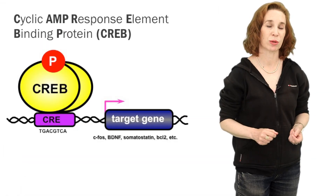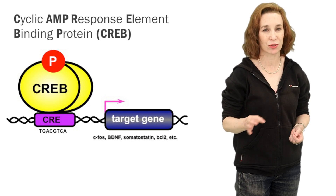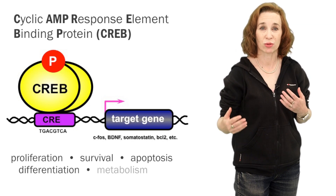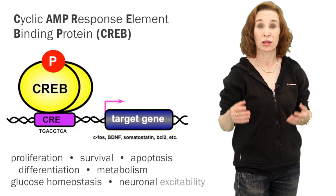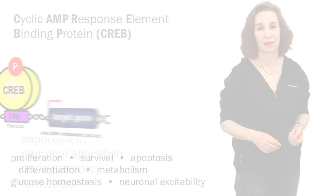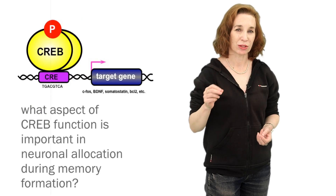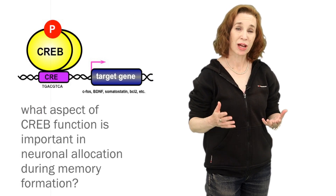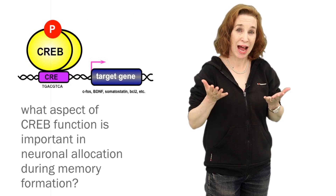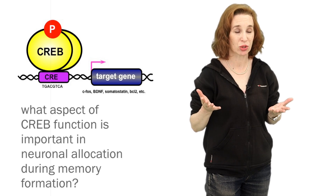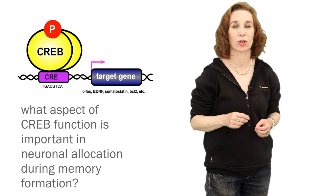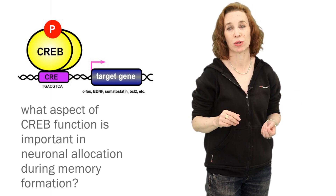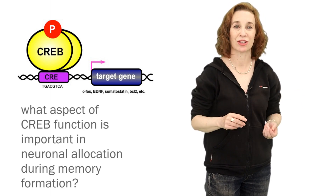CREB is a ubiquitous transcription factor implicated in many diverse cellular processes, including proliferation, survival, apoptosis, differentiation, metabolism, glucose homeostasis, and neuronal excitability. We wondered what aspect of CREB function was important in neuronal allocation during memory formation. One plausible mechanism is that neurons with high levels of CREB are preferentially recruited to a memory trace because these neurons are more excitable than their neighbors. A postsynaptic neuron that is more excitable than its neighbor would be primed for allocation into a memory trace.